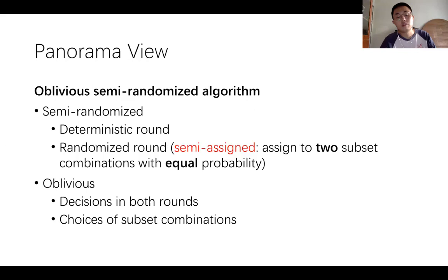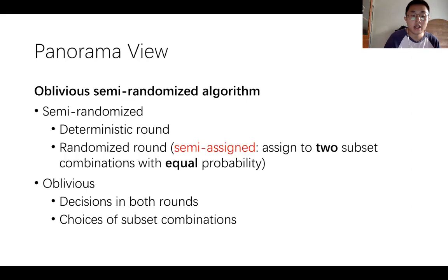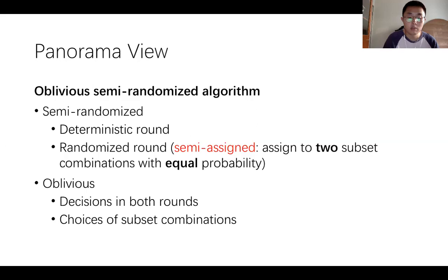When it comes to the randomized algorithm, the payments become different. Our algorithm is what we call an oblivious semi-randomized algorithm. The algorithm consists of deterministic rounds and randomized rounds. In the randomized round, each impression is semi-assigned to two advertisers — that is, choose two subset combinations and assign the impression to one of them with equal probability. The decisions in both rounds as well as the choices of the subset combinations are oblivious to the algorithm.